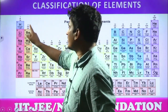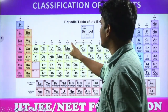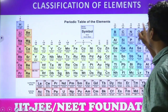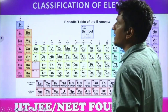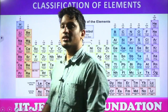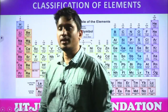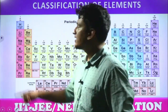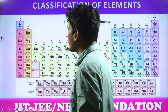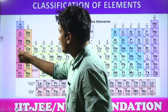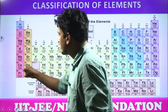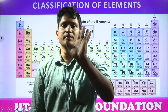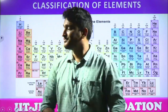You can see groups 1 through 18 as vertical columns. And all the elements are placed into 7 periods as horizontal rows. So the modern periodic table has 18 groups and 7 periods.